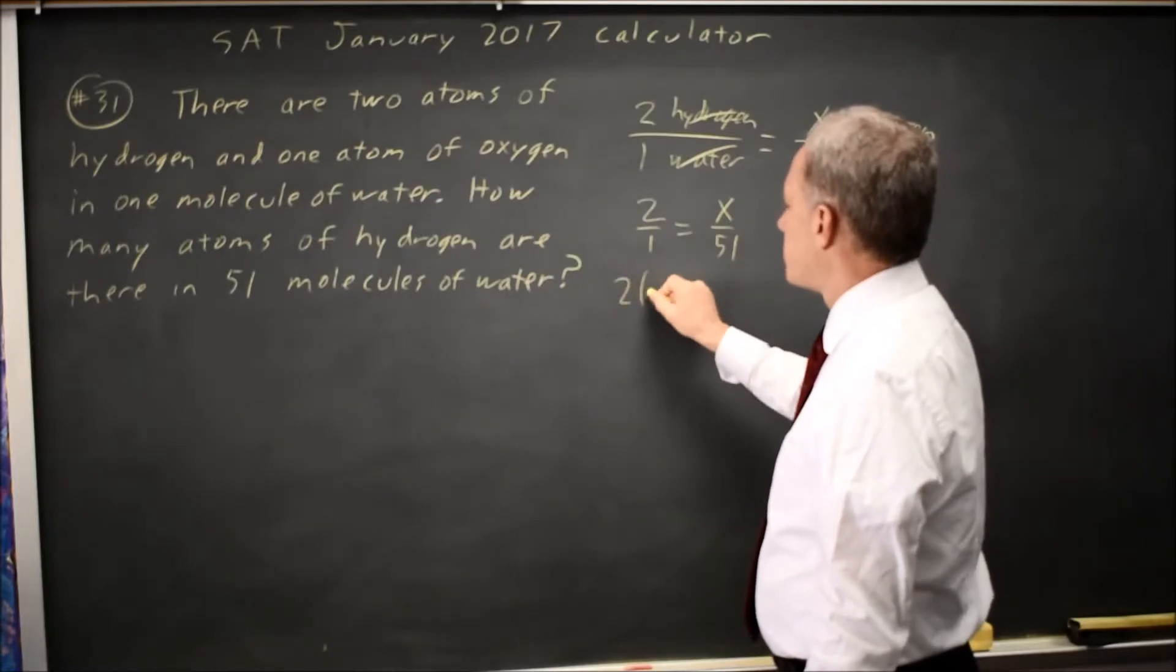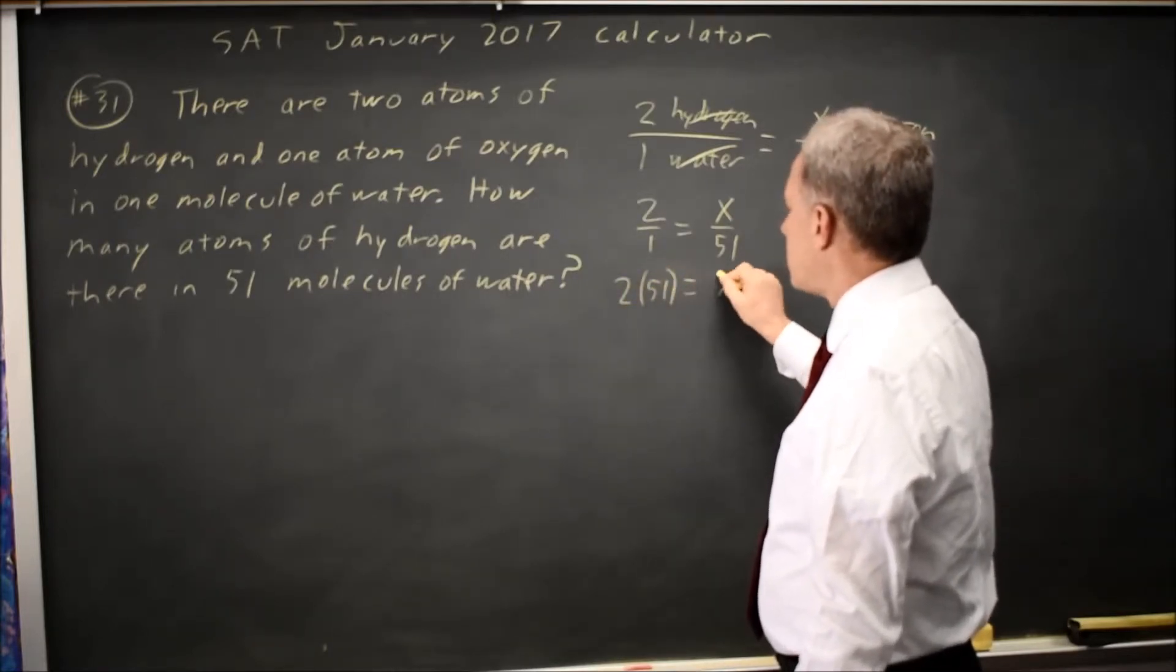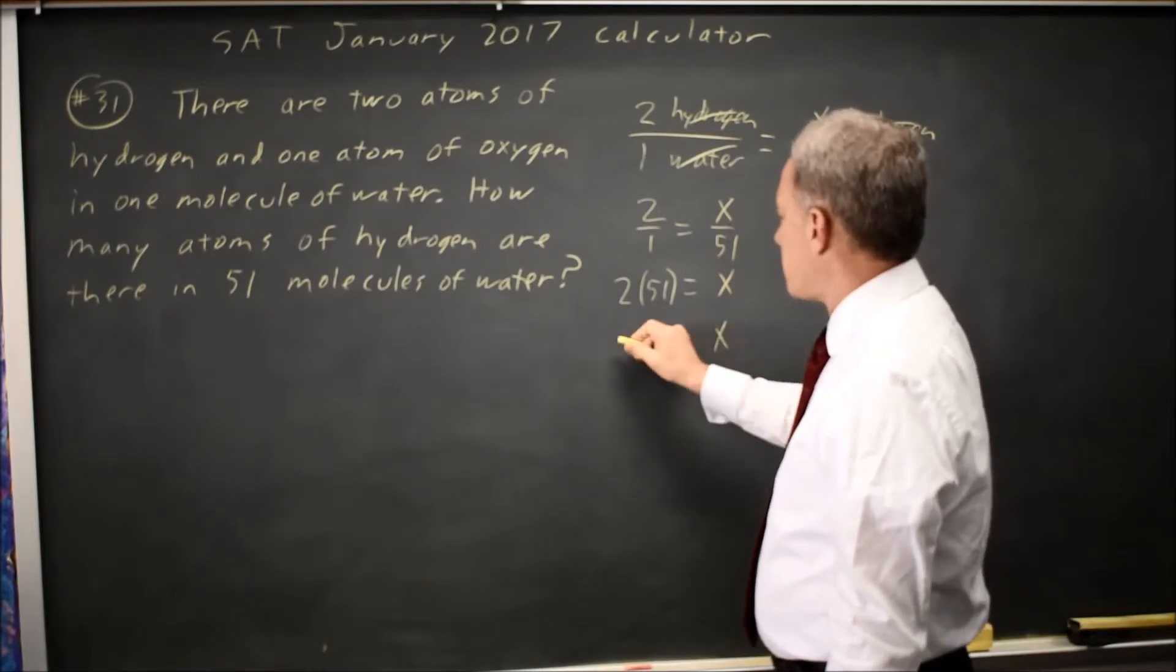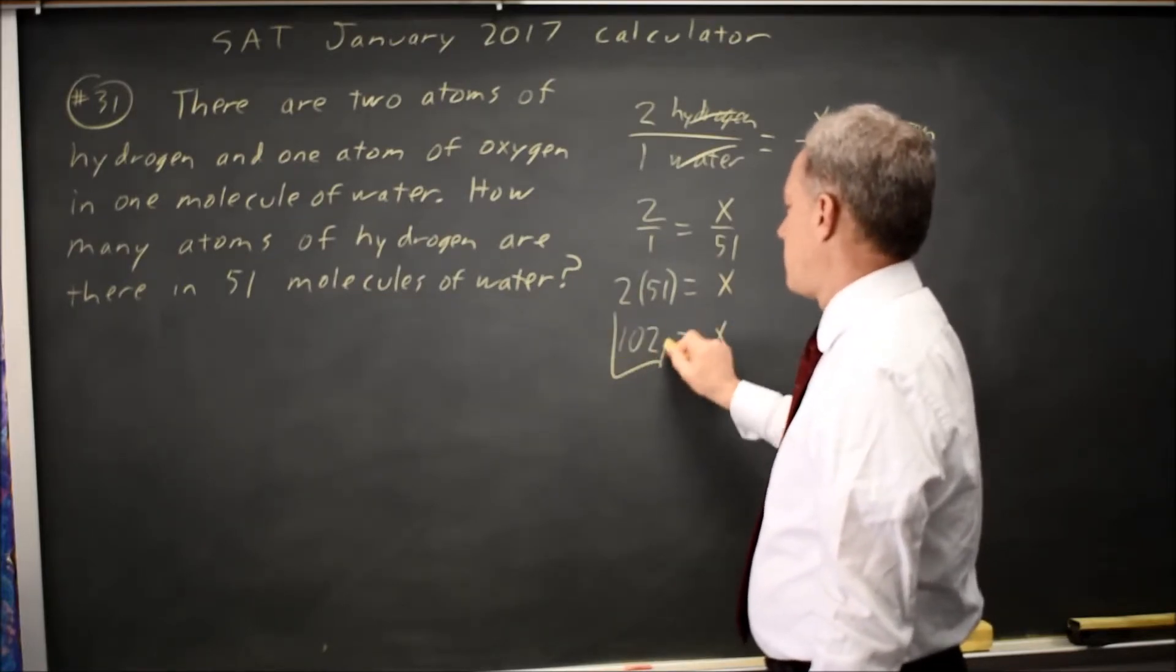Cross multiplying, I have twice 51 equals 1 times x. And I can use my calculator to get twice 51 is 102, or I can do that in my head.